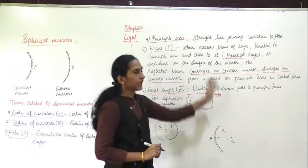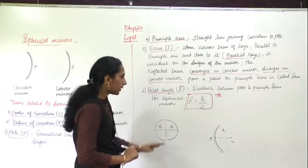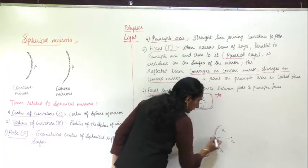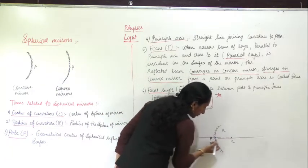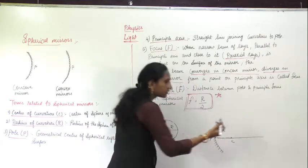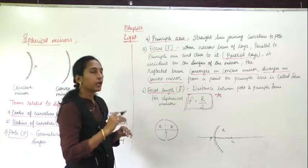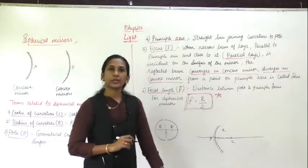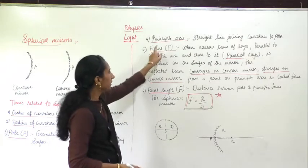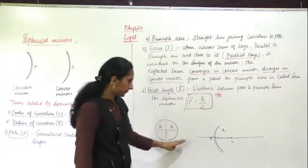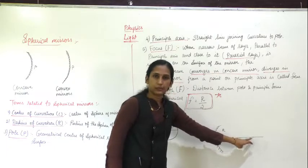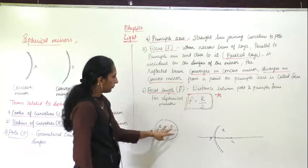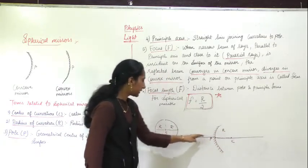The fourth term is principal axis. We draw a straight line which passes through the pole and the center of curvature. This straight line or axis passing through the pole and the center of curvature is called the principal axis. It is the straight line joining the center of curvature to the pole.